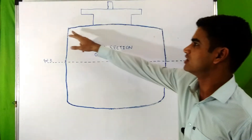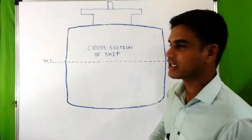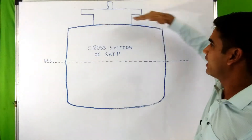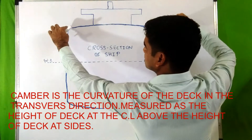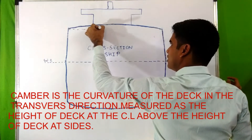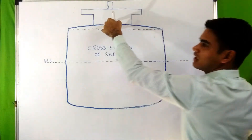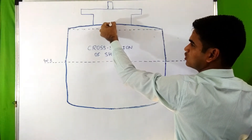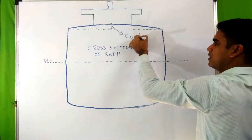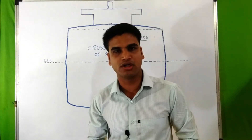You can see this curvature in the transverse direction — this is known as camber. It is measured as the height of the deck at the centerline above the height of the deck at the ship sides. This height at the centerline is considered as camber. Camber is actually provided to drain liquid or seawater from the deck.